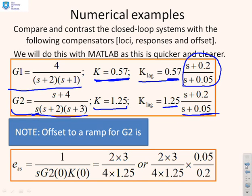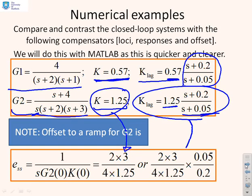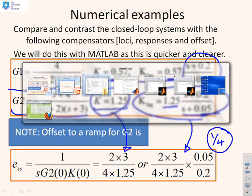Now, just as a note at the bottom here, offset to ramps for G1, there's no integrator. The offset to a ramp is infinity. But for the second example, if we've got a single integrator, we can calculate the offset to a ramp. So if we use just K, then this is the offset to the ramp: 2 times 3 over 4 times 1.25. If you use the lag, this is the offset to the ramp. And what do you notice? You've reduced the offset by a multiplying factor of a quarter. So it's much, much smaller. So the lag has improved your offset and that is why you might use it. Let's go to MATLAB now.